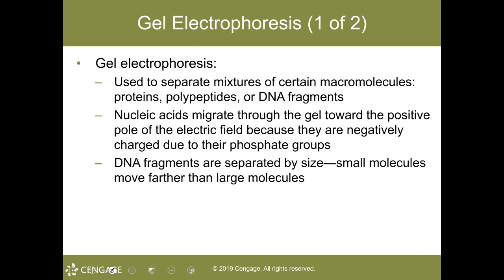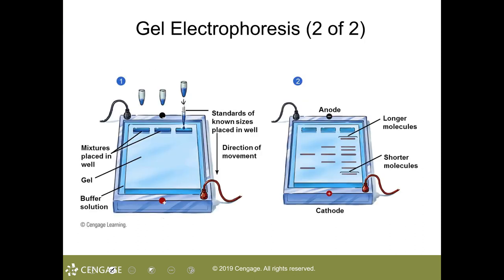Nucleic acids migrate toward the positive pole because they are negatively charged due to the phosphate groups, and they separate according to size — smaller molecules move farther and faster than larger molecules. The DNA samples are exposed to the same restriction enzyme, which creates restriction fragment length polymorphisms, or RFLPs — fragments of DNA having different lengths cut using restriction enzymes.